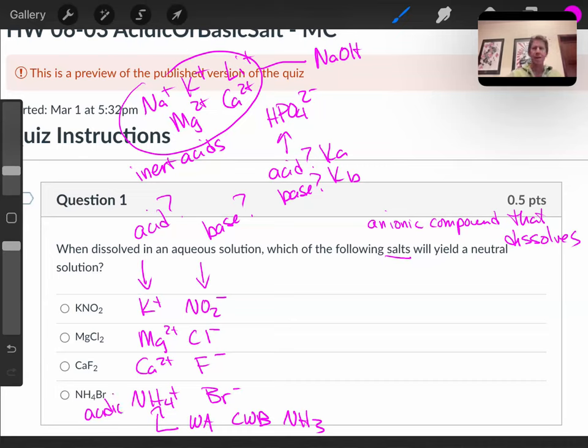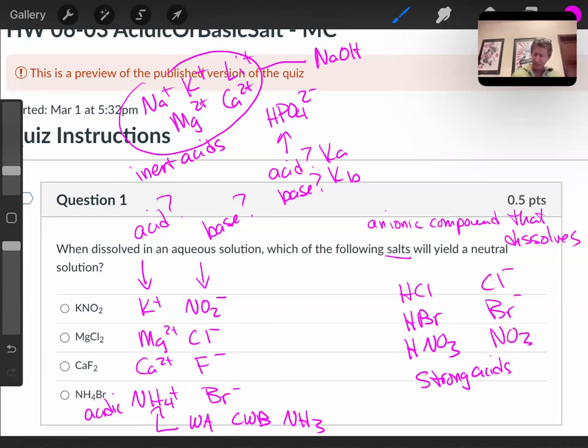For the anions, strong acids like HCl, HBr, and HNO3 have conjugate bases - Cl-, Br-, and nitrate - that are all inert bases.